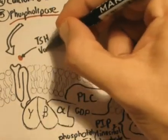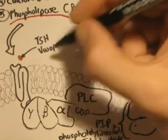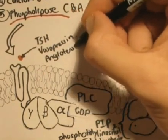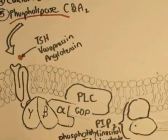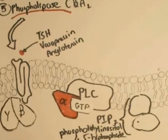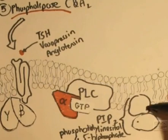Let's see how PLC second messenger system works. A ligand, usually thyroid-stimulating hormone, vasopressin, or angiotensin, binds to the G-protein coupled receptor, inducing a conformational change, activating the G-protein. GDP gets changed to GTP, alpha subunit dissociates with the beta-gamma complex. The alpha subunit attaches to the phospholipase C, which then hydrolyzes PIP2.